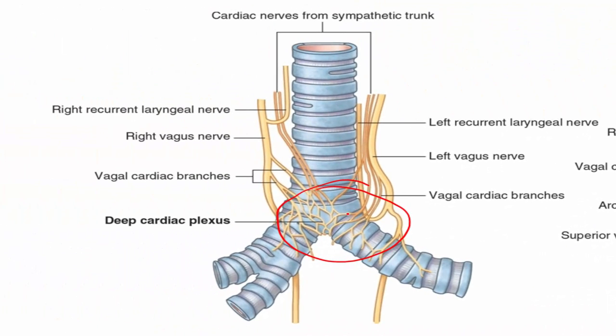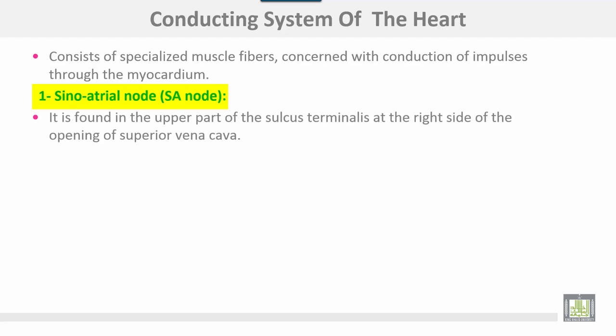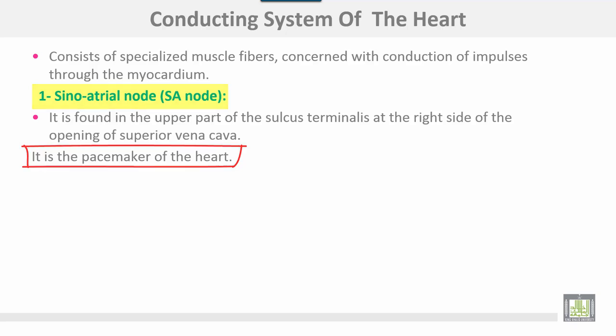The conducting system of the heart consists of specialized muscle fibers concerned with the conduction of impulses through the myocardium. Number one is the SA node, or sinoatrial node, found in the upper part of the sulcus terminalis at the right side of the opening of the superior vena cava. It is the pacemaker of the heart.